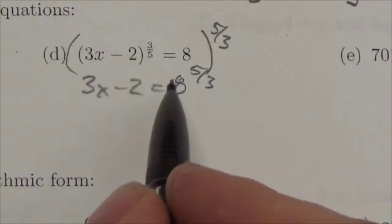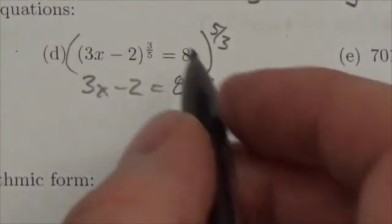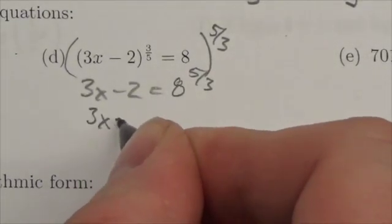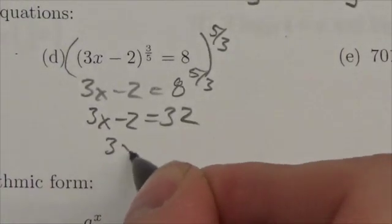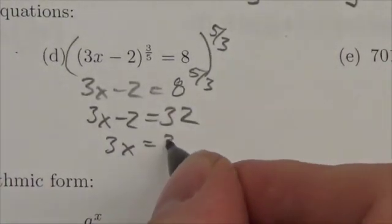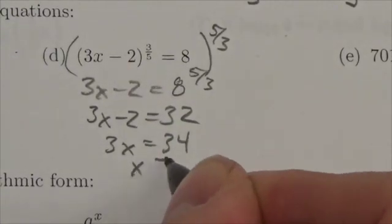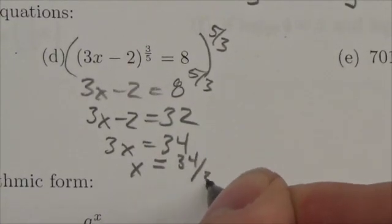But in this case we can just evaluate this. The cube root of 8 is 2 to the fifth is going to be 32, so 3x minus 2 is equal to 32. Bring the 2 over, 3x is equal to 34, so x is equal to 34 thirds.